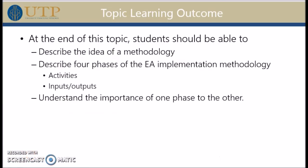Firstly, the learning outcome. At the end of this topic, students should be able to describe the idea of a methodology — so you should know what a methodology is. Number two, students should be able to describe the four phases of the EA Implementation Methodology in terms of the activities in those phases and also the input and outputs of those four phases. And lastly, students should appreciate or understand the importance of one phase of the methodology to the other.